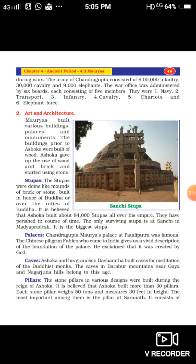Regarding stupas: the Sanchi Stupa is dome-shaped. The stupas were dome-like mounds of brick or stone built in honor of Buddha or over the relics of Buddha. It is believed that Ashoka built about 84,000 stupas all over his empire. They have perished in course of time. The only surviving stupa is at Sanchi in Madhya Pradesh — the biggest stupa.